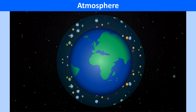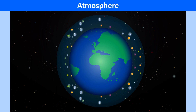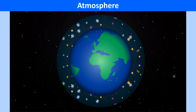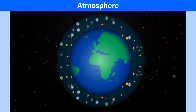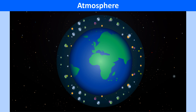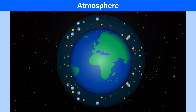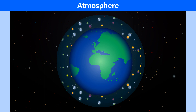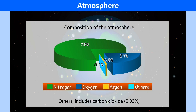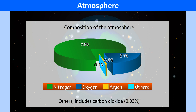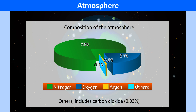It is the atmosphere that makes our Earth unique. It is the blanket of air that surrounds the Earth. The air is a mix of gases such as nitrogen, 78%; oxygen, 21%; carbon dioxide, 0.6%, etc.